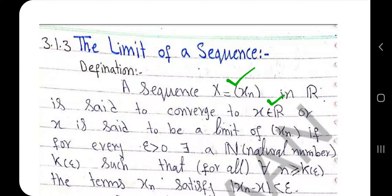For every epsilon, there exists a natural number k(epsilon) such that for n greater than or equal to k, n belongs to natural numbers. As we know, the sequence is a function whose domain is the set of natural numbers and whose range is contained in the set of real numbers. The term x_n must satisfy the condition that the distance between x_n and x must be less than or equal to epsilon, where n is greater than or equal to k(epsilon) and k is any natural number depending upon the value of epsilon.